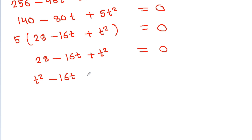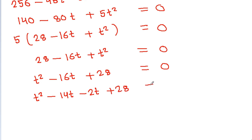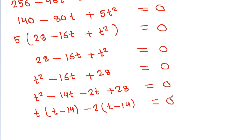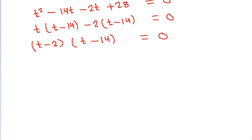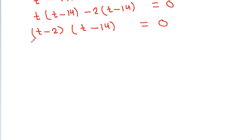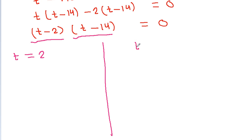Factoring t square minus 16t plus 28 equals 0: we split as t square minus 14t minus 2t plus 28 equals 0, giving t times t minus 14 minus 2 times t minus 14 equals 0, so t minus 2 times t minus 14 equals 0. From t minus 2 equals 0 we get t equals 2, and from t minus 14 equals 0 we get t equals 14.